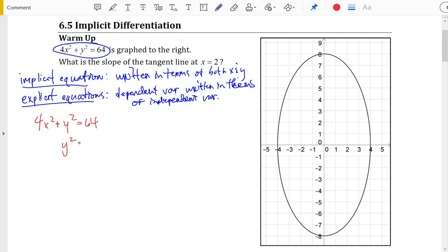So we'll move the 4x squared to the other side, 64 minus 4x squared, and take the square root: y equals the square root of 64 minus 4x squared.